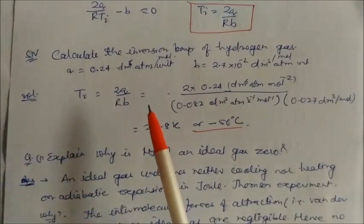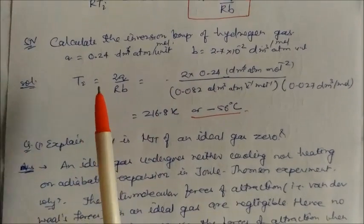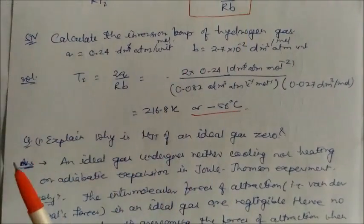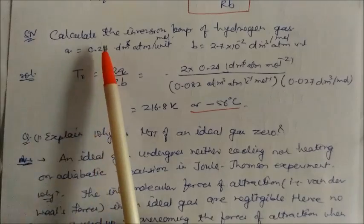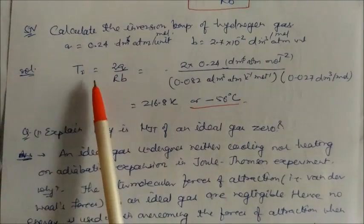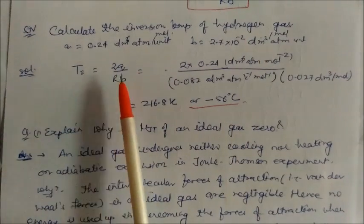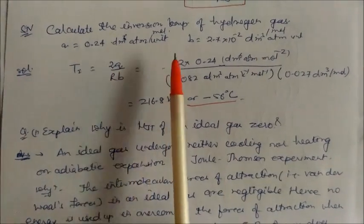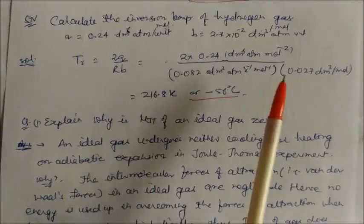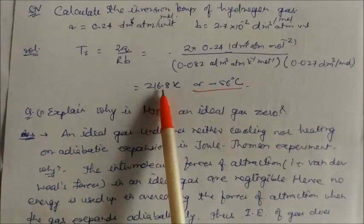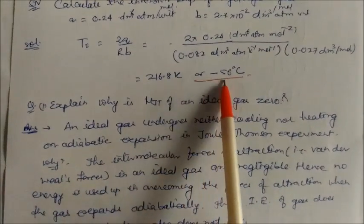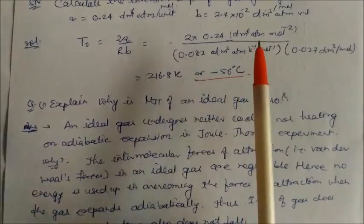Let us see some numericals. Calculate the inversion temperature of hydrogen gas. A and B values are given. Using T_i equal to 2a/Rb, substituting the given values of a, R, and b, we get T_i equal to 216.8 Kelvin, that is minus 56 degrees centigrade.